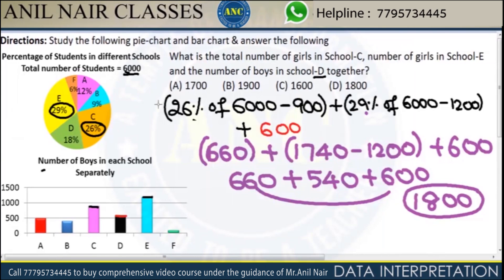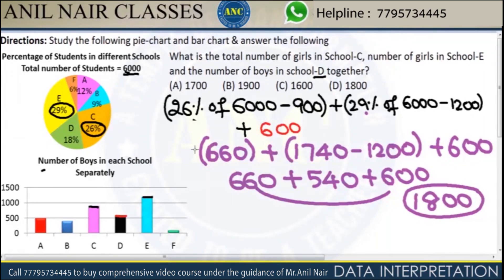Either you should be good in percentages or you should be extremely good in multiplying bigger numbers. If you are not good, please consider that it is difficult to solve EI cases later. This is one of the methods of solving. The answer is 1800.